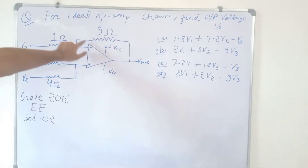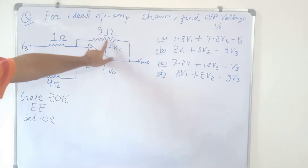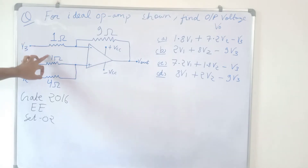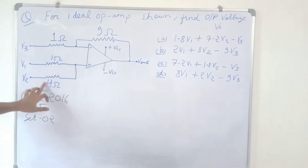The feedback resistor is 9 ohms. The other resistors in the circuit are: one resistor is 1 ohm, another resistor is 1 ohm, and the remaining resistor is 4 ohms.